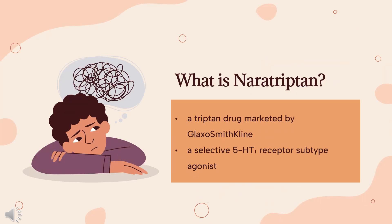What is Narotriptin? Narotriptin is a triptan drug marketed by GlaxoSmithKline and is used for the treatment of migraine headaches. It is a selective 5-HT receptor subtype agonist. It was patented in 1987 and approved for medical use in 1997.